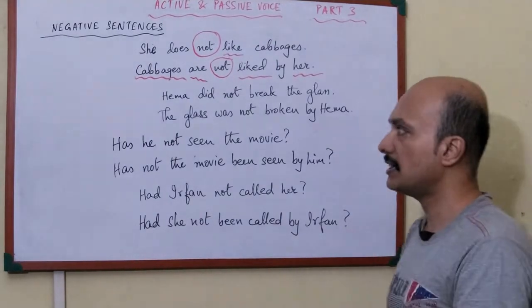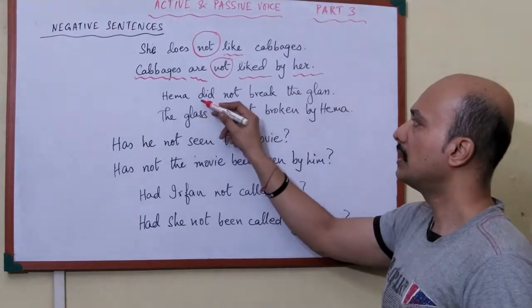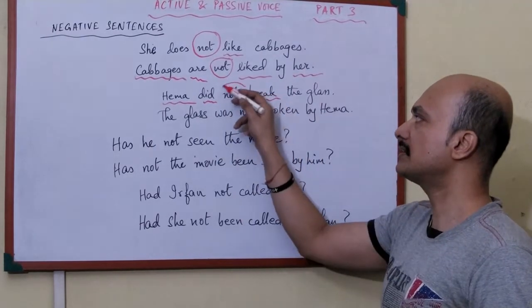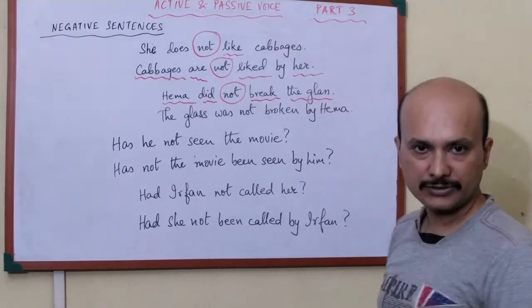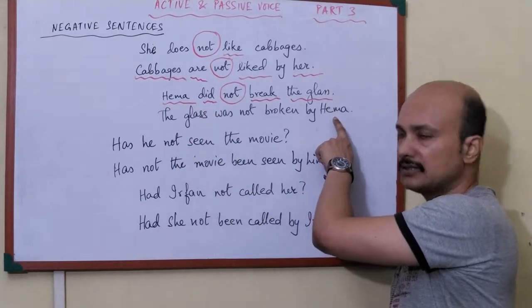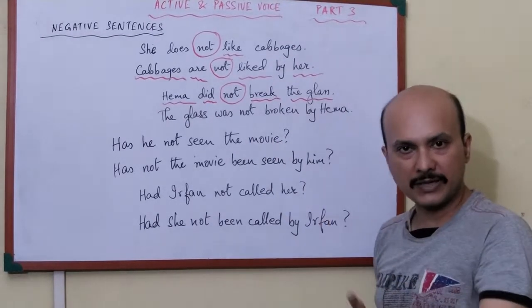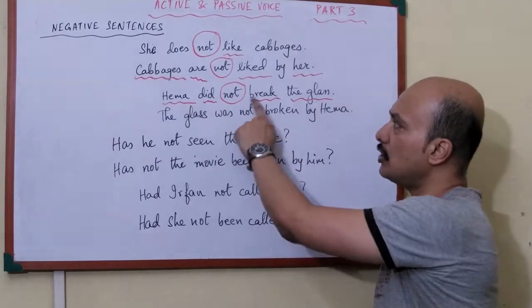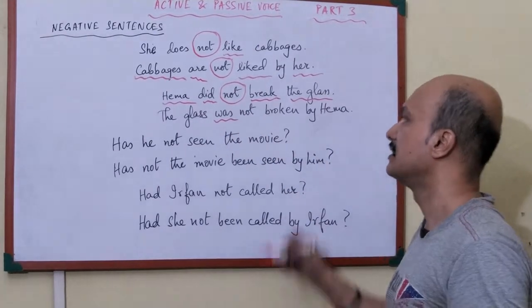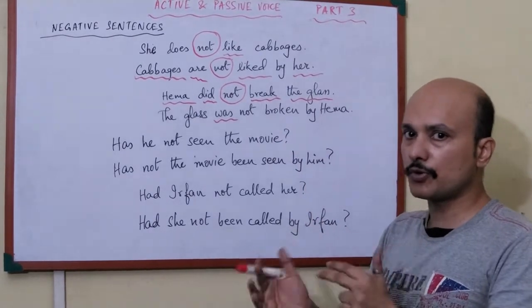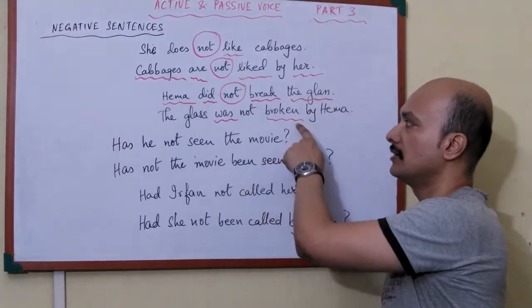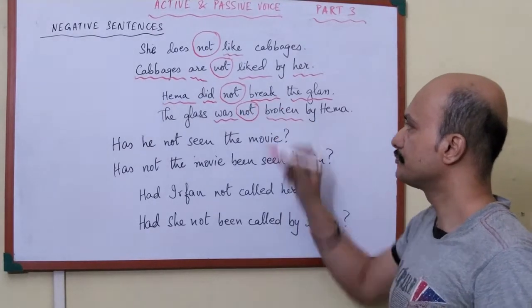See another example: 'Hema did not break the glass.' 'Hema' is the subject, 'did' is the supporting word, 'break' is the main word, 'not' is written in the middle, and 'the glass' is the object. The object 'the glass' comes into the subject position. 'Hema' becomes the object as 'by Hema'. 'Did not break' becomes 'was not broken' — 'did' changes to 'was' in the past tense, and 'break' becomes 'broken' the past participle. In the middle we write 'not'.